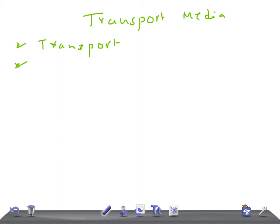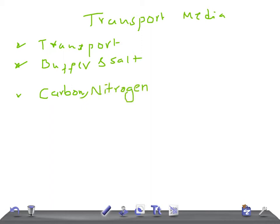Transport media should contain only buffers and salts, because we should not grow all organisms while transporting. It should lack carbon, nitrogen, and organic growth factors, so as to prevent microbial multiplication. This is really very important to remember.